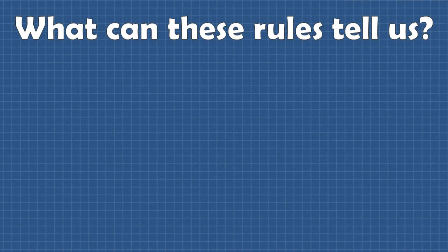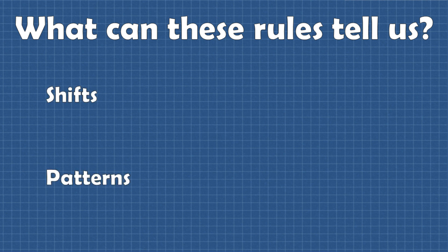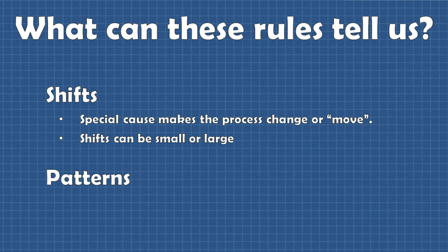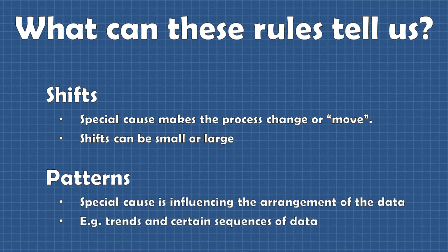Control charting rules help us detect two things: shifts and patterns. Shifts are phenomena that occur when some special cause has made the process change or move. Obviously there can be different amounts of shift - a process can shift a large amount or just a small amount. Patterns are arrangements of data that can emerge when a special cause is influencing the form or shape of the data. These are things like trends or certain sequences.